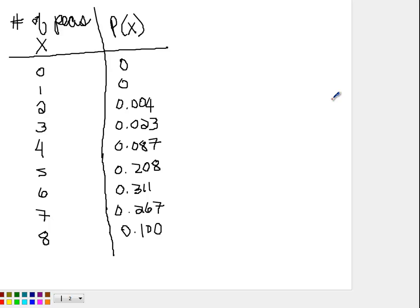And I put a table up here, and these are the probability numbers, probability of number of peas with green pods among 8 offspring peas. If you look at the first column, this is the number of peas and the probability that they have green pods.